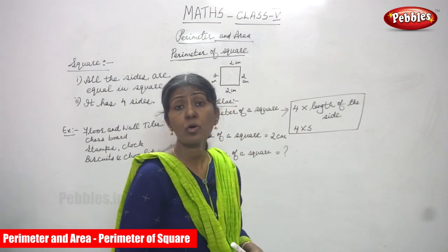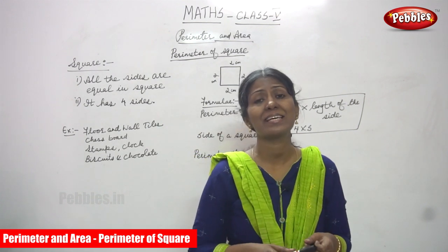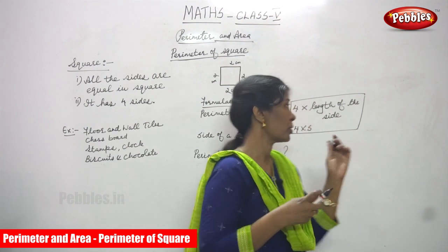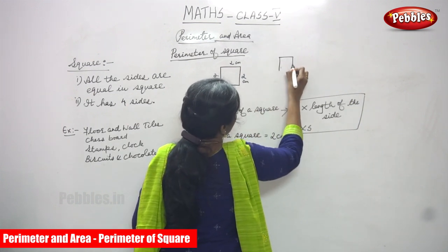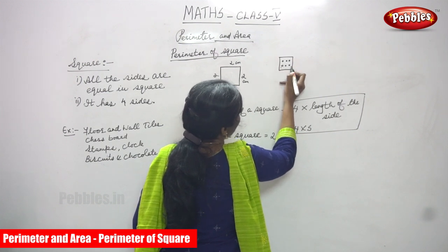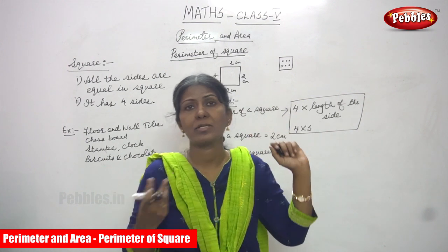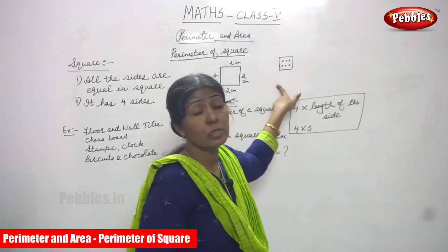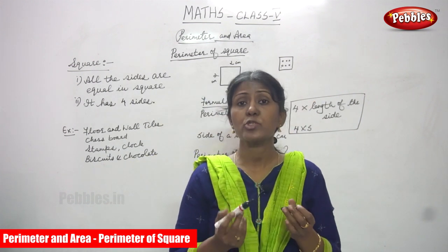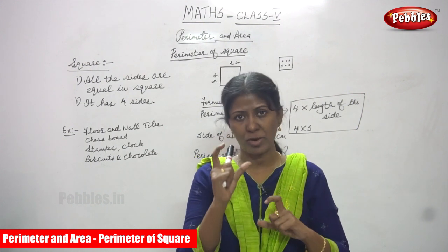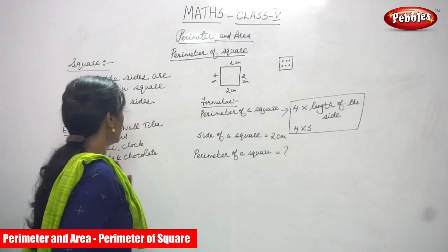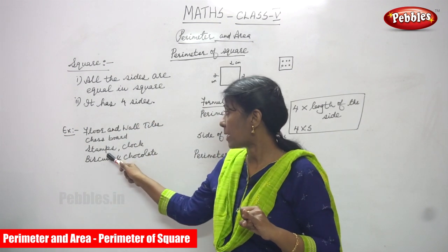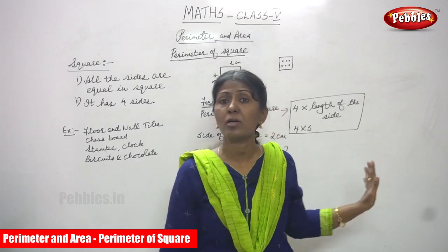Another example is biscuits and chocolate. I think you all love to eat biscuits and chocolates. So biscuits like maska chaska, this kind of biscuit, are in a square shape — it is a square-shaped biscuit with dots inside. Dairy Milk chocolate is also in a square shape. So floor and wall tiles, chessboard, stamps, clock, biscuits, and chocolate — all these things come under square shapes.